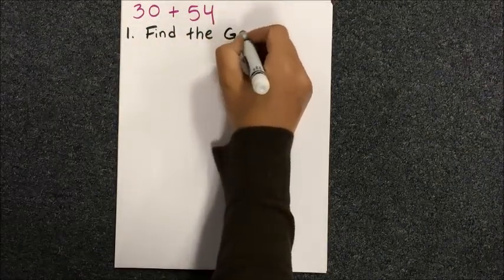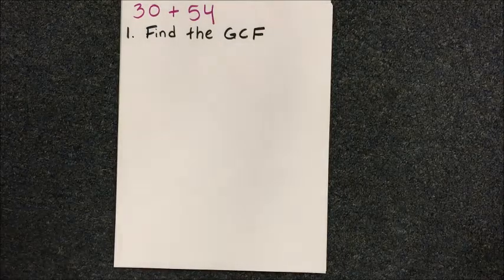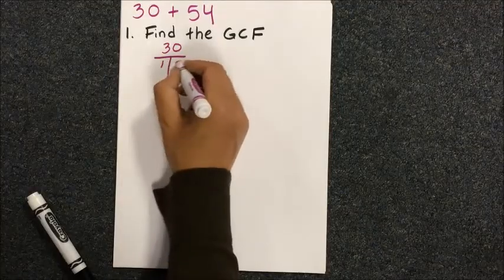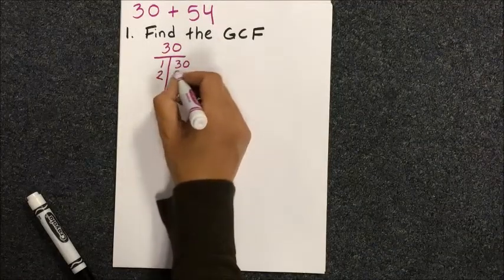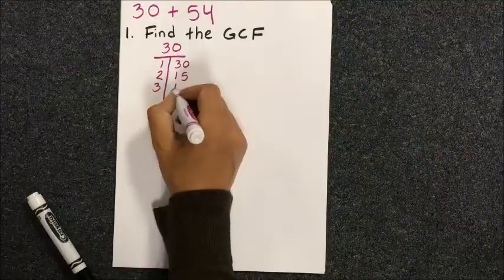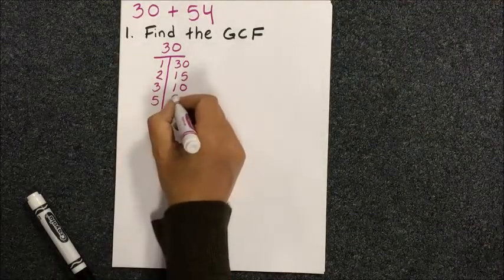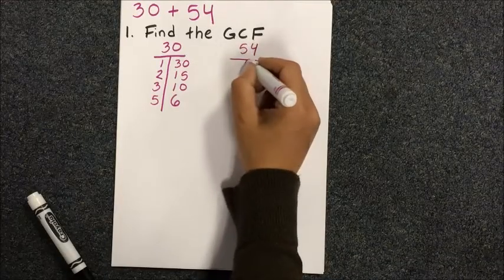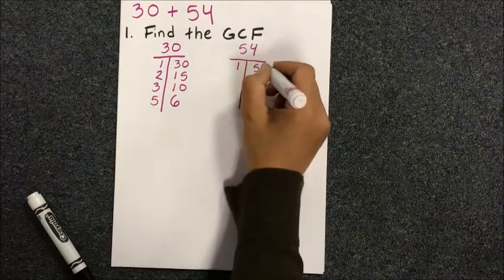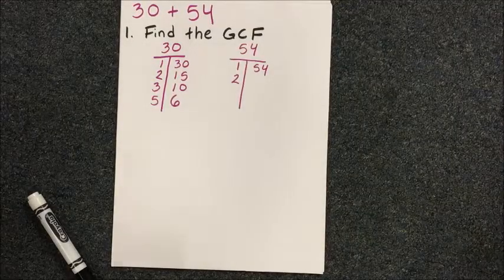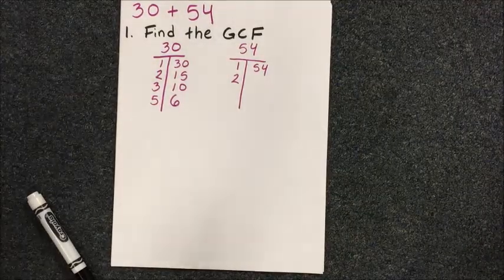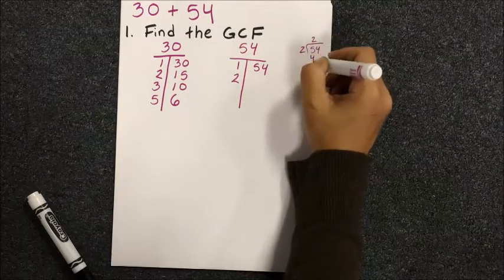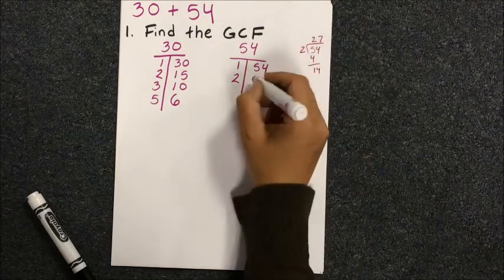The numbers we're using are 30 and 54. First step is to find the factors that we can multiply to get to each number, listing them out. I really want to emphasize knowing your multiplication tables will make this process so easy. Otherwise it gets really frustrating and you end up doing a lot of work on the side of your page doing division problems to see what you can divide that original number by to get the factors.